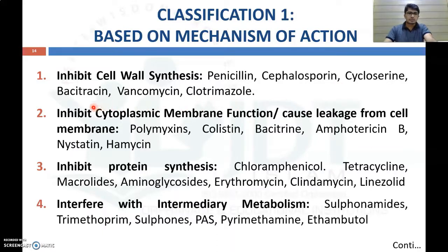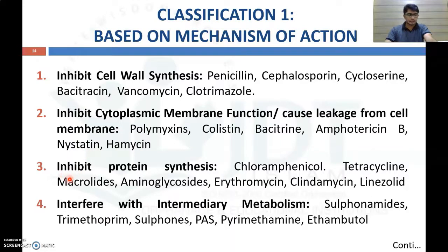The second class of drugs inhibit cytoplasmic membrane function or cause leakage from the cell membrane. Examples are polymyxin, colistin, bacitracin, amphotericin B, nystatin, and hamycin. The third class inhibits protein synthesis by binding with different ribosome subunits like 30S and 50S ribosomes. Examples are chloramphenicol, tetracycline, macrolide antibiotics, aminoglycosides, erythromycin, clindamycin, and linezolid.